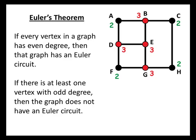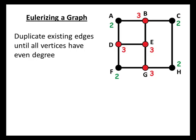But as we've learned, not all is lost. We can Eulerize this graph by duplicating existing edges until all vertices have even degree. What does that look like?